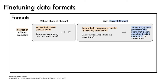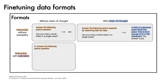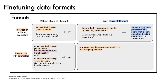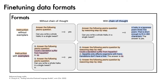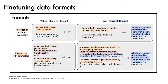A further kind of format consists of instructions with exemplars. The input begins with the instruction Q: "Answer the following yes-no question: Could a dandelion suffer hepatitis?" with the answer A: "No." Then comes the instruction again, followed by the question of interest: "Can you write a whole haiku in a single tweet?" and a prompt for the answer. The target is simply "yes." Finally, there are instructions with exemplars with chain-of-thought. Such an input includes Q: "Answer the following yes-no question by reasoning step-by-step: Could a dandelion suffer hepatitis?" followed by a chain-of-thought rationale: "Hepatitis only affects organisms with livers. Dandelions don't have a liver. The answer is no." Then the same instruction followed by the question of interest, and a prompt for the answer. The target includes chain-of-thought reasoning in addition to the answer.